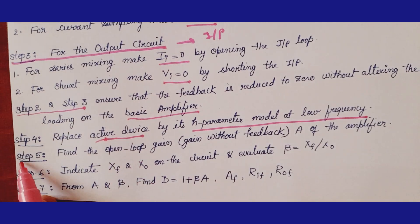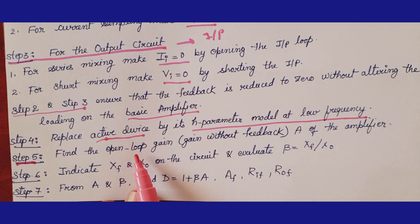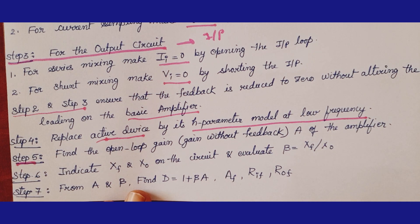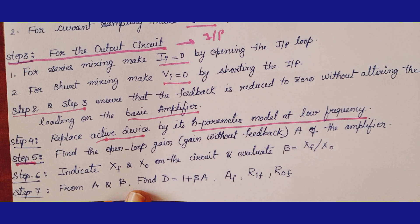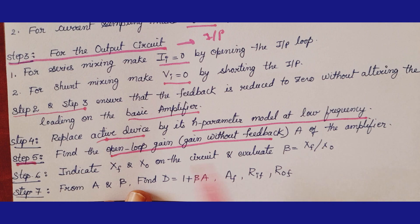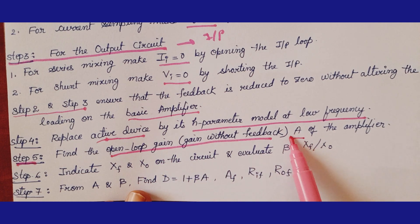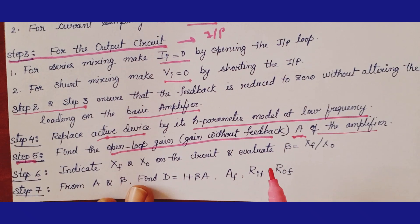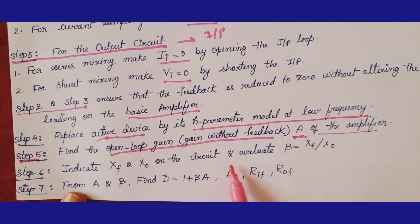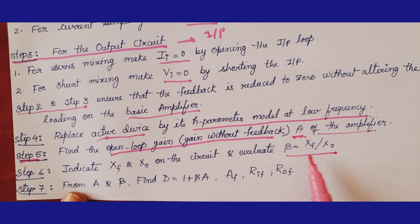Step 5: find the open loop gain A, since the obtained circuit is now without feedback. Step 6: indicate the feedback signal Xf and the output signal X_out on the circuit and evaluate beta, where beta = Xf / X_out.